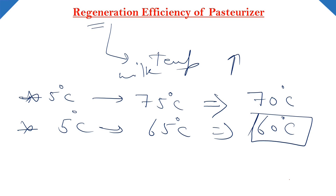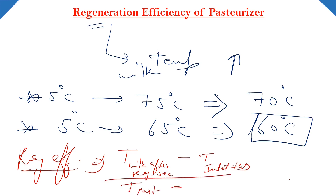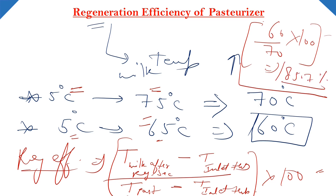Toh regeneration efficiency hamari kya hui? We calculate regeneration efficiency by one simple formula. Regeneration efficiency = (temperature of milk after regeneration section minus inlet temperature) divided by (pasteurization temperature minus inlet temperature of milk) multiplied by 100. So by using this relation, we can calculate the regeneration efficiency. That is: (65 - 5) divided by (75 - 5) multiplied by 100 = 60 divided by 70 multiplied by 100 = 85.7%. So that is the regeneration efficiency of the pasteurizer.